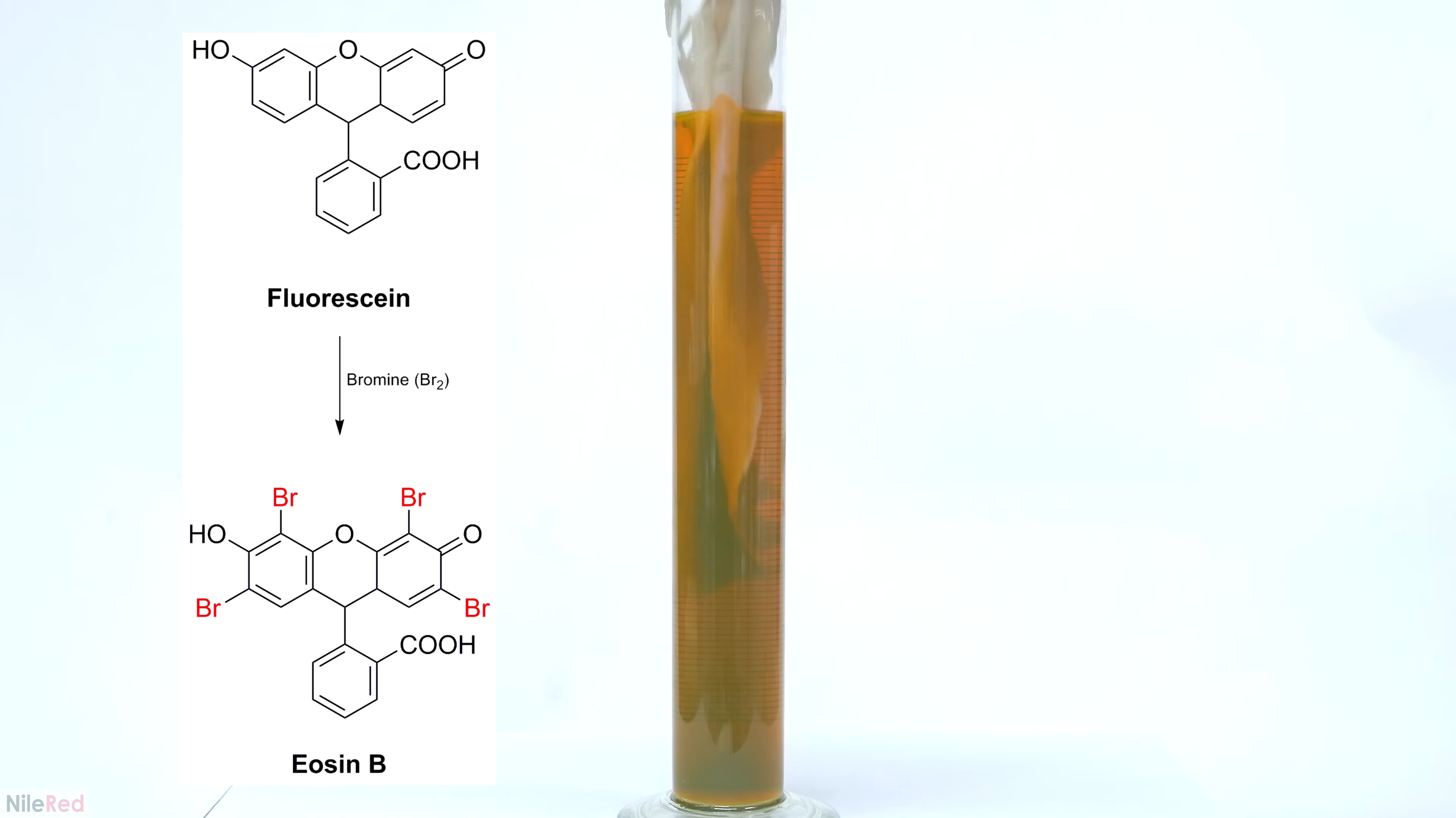If you don't understand the chemical structure it really doesn't matter. The only thing you have to notice is that compared to the fluorescein the eosin has a bunch of bromines added onto it.